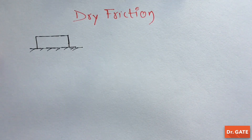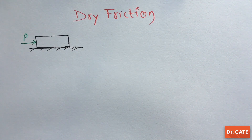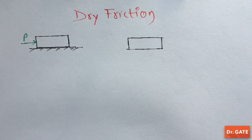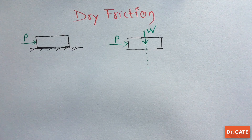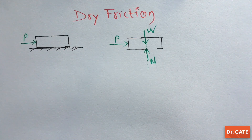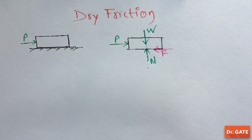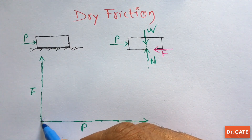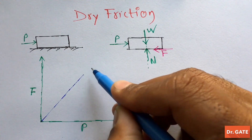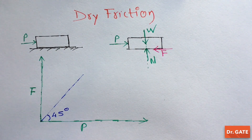Again, take a block on a surface and apply a pushing force P. For further analysis, let's draw the free body diagram of this block. The pushing force P acts horizontally, the weight of the block acts downward, the normal reaction of the ground acts upward, and the frictional force acts opposite to the pushing force. If we draw a graph of pushing force versus frictional force, initially the frictional force is just equal and opposite to the pushing force until the block starts moving.